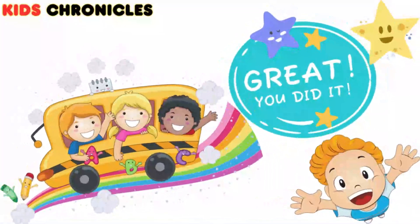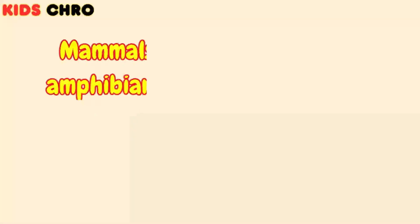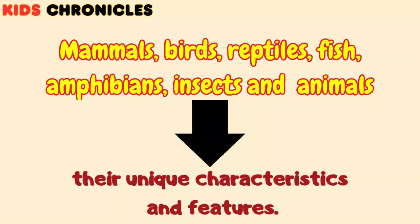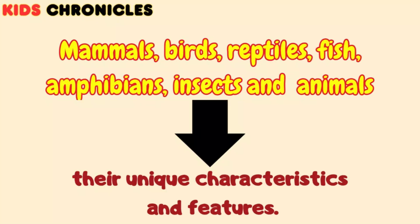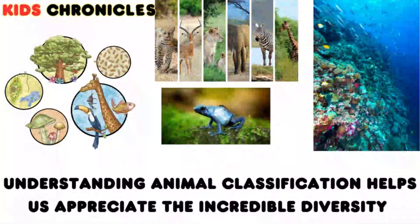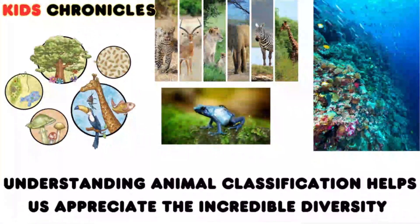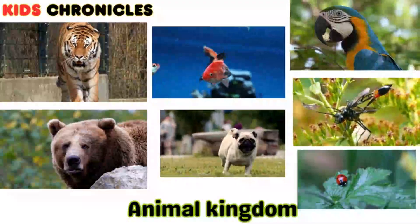So there you have it — mammals, birds, reptiles, fish, amphibians, and insects, each with their unique characteristics and features. Understanding animal classification helps us appreciate the incredible diversity found in the animal kingdom.